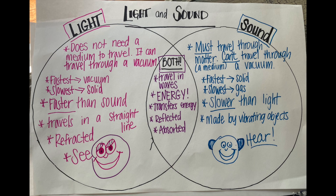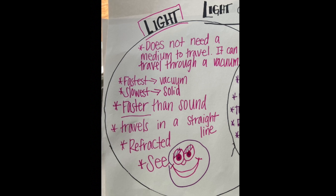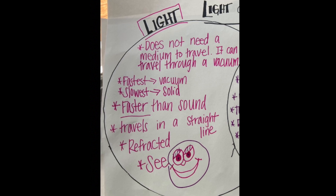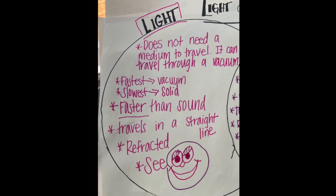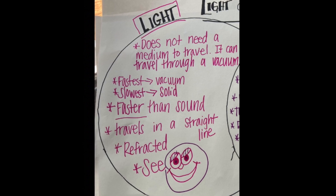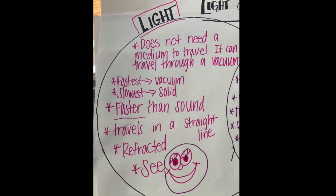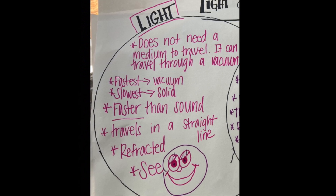Here's our final Venn diagram about light and sound. On the light side: it does not need a medium to travel, it can travel through a vacuum, light is fastest through a vacuum and slowest through a solid, light is faster than sound, it travels in a straight line, it can be refracted, and we see light.